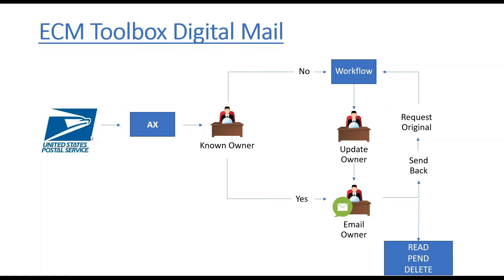Mail will arrive via US Mail, FedEx, or UPS — the hardcopy mail arrives at your location or perhaps at an off-site location. The work is processed and imported into Application Extender. There are rules inside of Application Extender: if the owner is known, then an email gets sent to the owner once a day letting them know that their records should be reviewed.